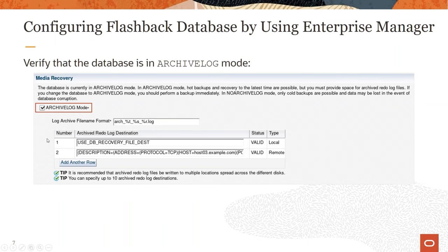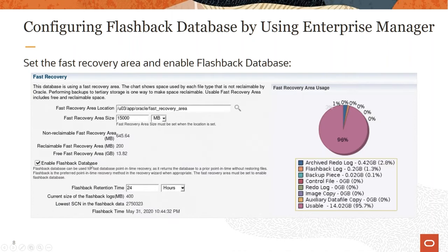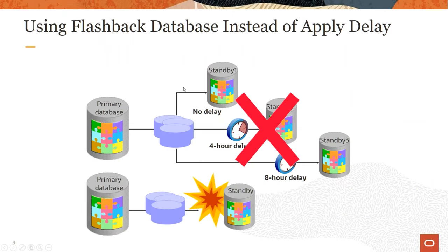You will have to configure archive log mode as required, then enable flashback database. Your flashback logs will be stored in the fast recovery area, so you will have to allocate enough space for the fast recovery area. If you are using flashback database and you enable flashback in both the primary and standby databases, you don't need the redo apply delay feature.